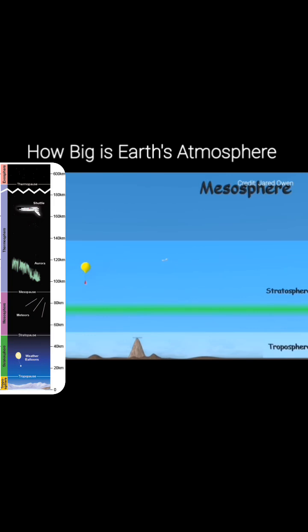Next, we have the mesosphere. This layer goes up to about 50 miles. The air is thin up here. However, this is where there's finally enough air that meteors start to burn up. Airplanes and weather balloons can't go this high, but rockets won't stay in this layer for long as they blast into orbit.